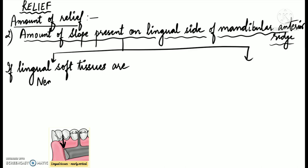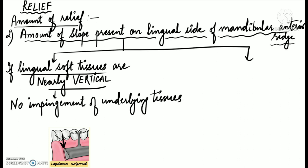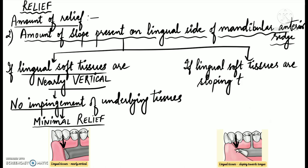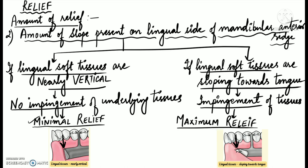Regarding relief based on the slope of the lingual soft tissues: if the lingual soft tissues are nearly vertical, movement of the major connector will not result in impingement of the underlying tissues, so minimal relief is required. On the other hand, if the lingual soft tissues of the anterior ridge are sloping towards the tongue, movement of the major connector will bring it closer to the adjacent tissues, resulting in their impingement; therefore a maximum amount of relief is required in such cases.